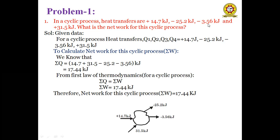The third heat transfer is minus 3.56 kJ, which means heat is rejected — it is output from the system. And the fourth heat transfer is plus 31.5 kJ, meaning heat is added to the system. So what is the net work for the cyclic process?